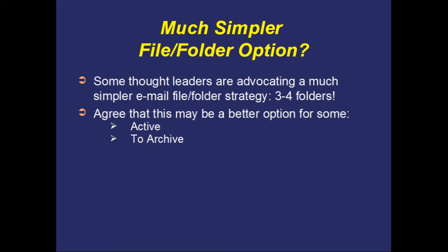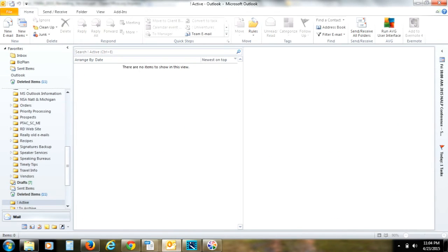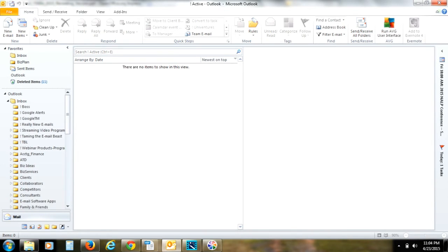A second folder called "To Archive" — this is stuff where you don't have an action related to that email, but you want to keep it for later reference in case something comes up related to that same topic, person, or client. Then you have a third folder called "To Delete," which is simply a place where you put emails you think you're very likely not going to need again. You keep them for a period of time — maybe one, two, or three months — and then delete them.